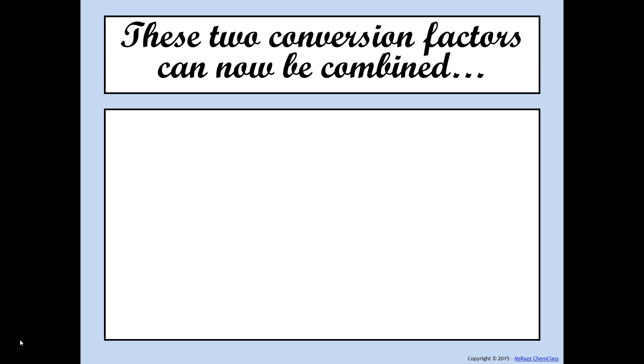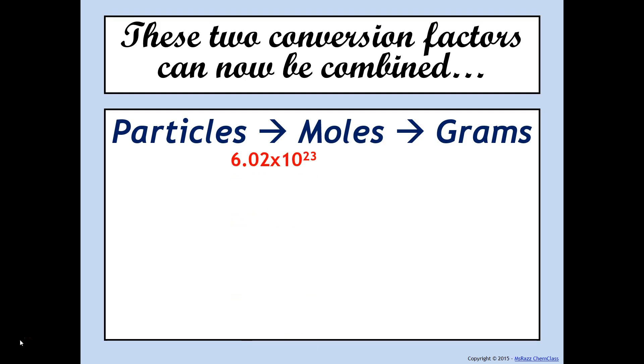These two conversion factors can now be combined. If that happens, you'll see that you'll have to go from particles into moles using the number 6.02 times 10 to the 23rd, and then go from moles into grams using the molar mass. This is a really helpful visual, so I really suggest that you write this down.